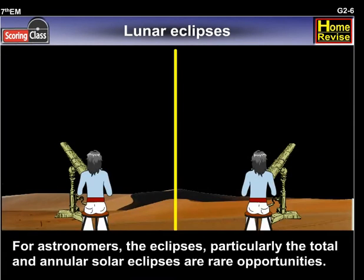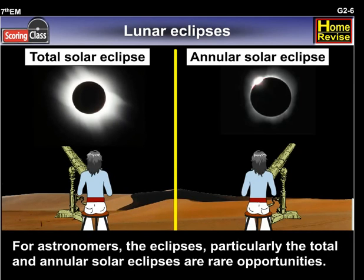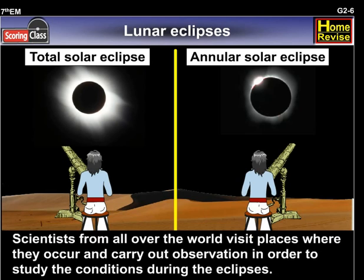For astronomers, the eclipses — particularly the total and annular solar eclipses — are rare opportunities. Scientists from all over the world visit places where they occur and carry out observations in order to study the conditions during the eclipses.